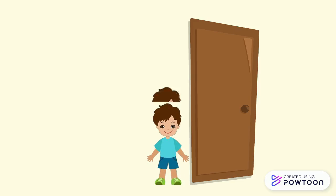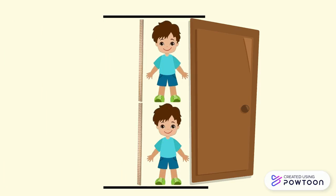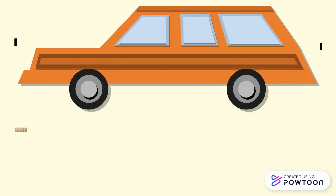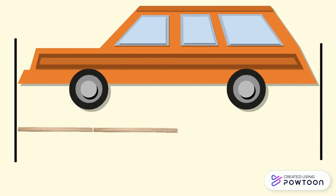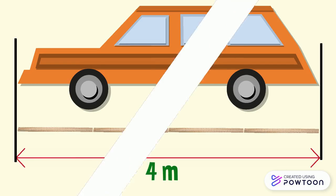A door has the same height as two children of four years old, so its height is two meters. A car has the same length as four board wooden rulers, so its length is four meters.